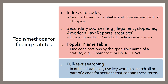Popular name tables are a code feature that are useful when you know the name of a statute, even a colloquial name such as Obamacare or the Patriot Act. When you look up the name, the table shows you where that statute was placed in the statutory code. Full text searching is the most commonly used method when using digital legal research databases for statutory research, and we'll cover that in later tutorials.